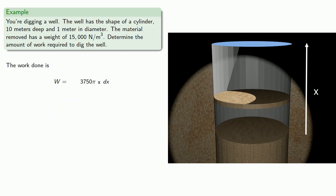Now that's just the work for removing that one slab of dirt. We'll need to sum up the work done for removing all those slabs. Now since our well is 10 meters deep, those x values are going to go from 0 meters, that's the top, down to 10 meters, that's the bottom of the well.